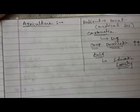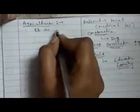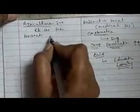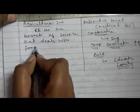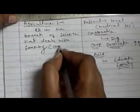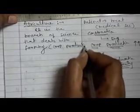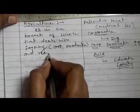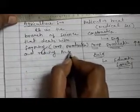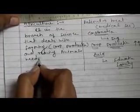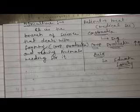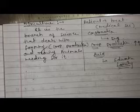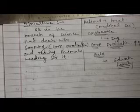Now we are going to see what is the meaning of agriculture. What is agriculture? It is the branch of science that deals with farming and rearing animals needed for it.